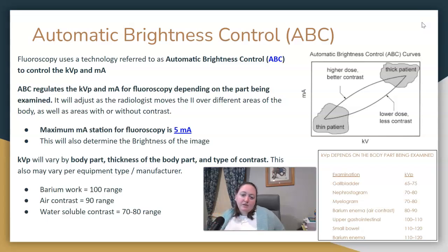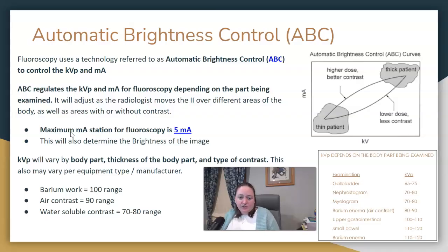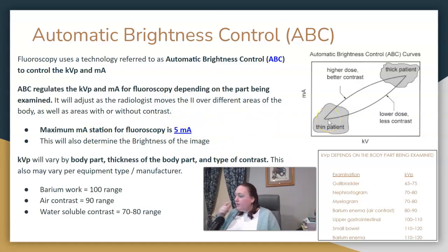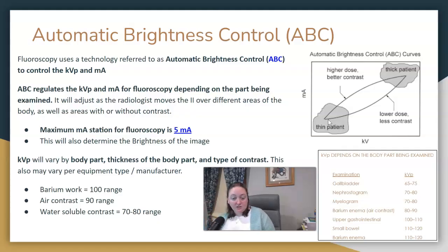There should be a KVP range, and the mA station for fluoroscopy tends to be lower. However, the maximum mA station for most machines is 5 mA. This will also determine the brightness of the image depending on what the image intensifier is over.